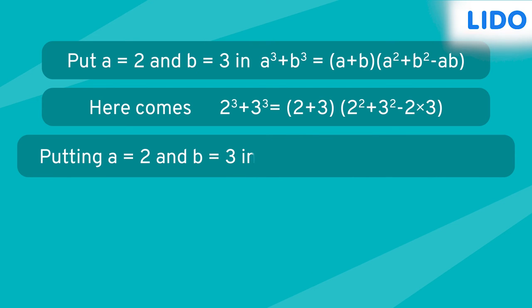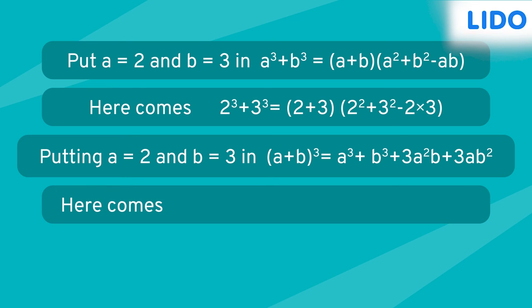Using the identity (A plus B) cube equals A cube plus B cube plus 3 A square B plus 3 A B square, we get (2 plus 3) cube equals 2 cube plus 3 cube plus 3 times 2 square times 3 plus 3 times 3 square times 2.